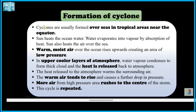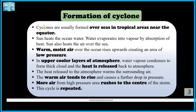We have seen cyclones form in tropical sea areas. The sun heats the ocean water, and the warm water causes the upper air to become warm. This warm, moist air goes up, and the area below becomes low pressure.